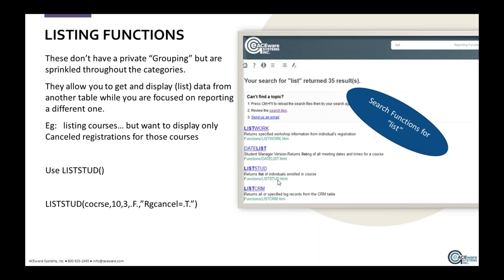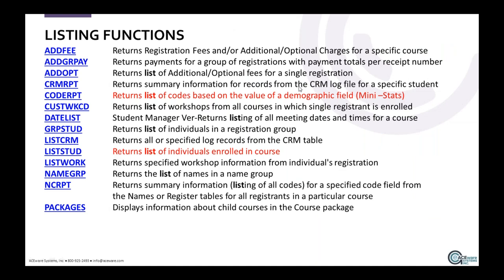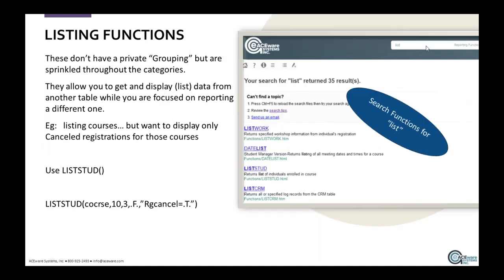The idea is that if you have a course report that is exactly the way you want, and then you say 'I'd like to see the names of the people who canceled registrations' — not everybody, just the people who canceled for this group of courses — rather than going through another report area and creating a new query, you could use the list stud function, passing a condition that says cancel must be true.